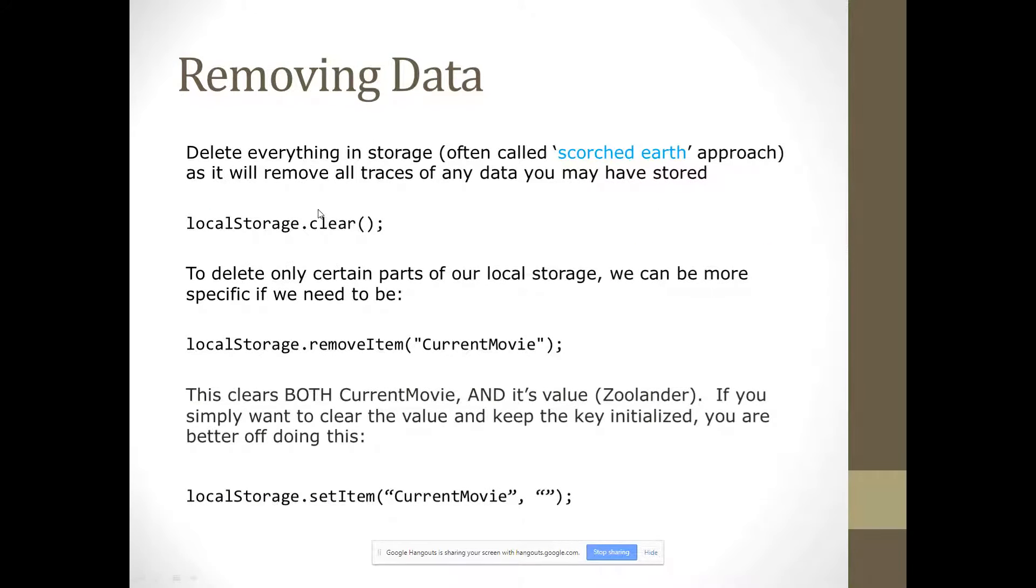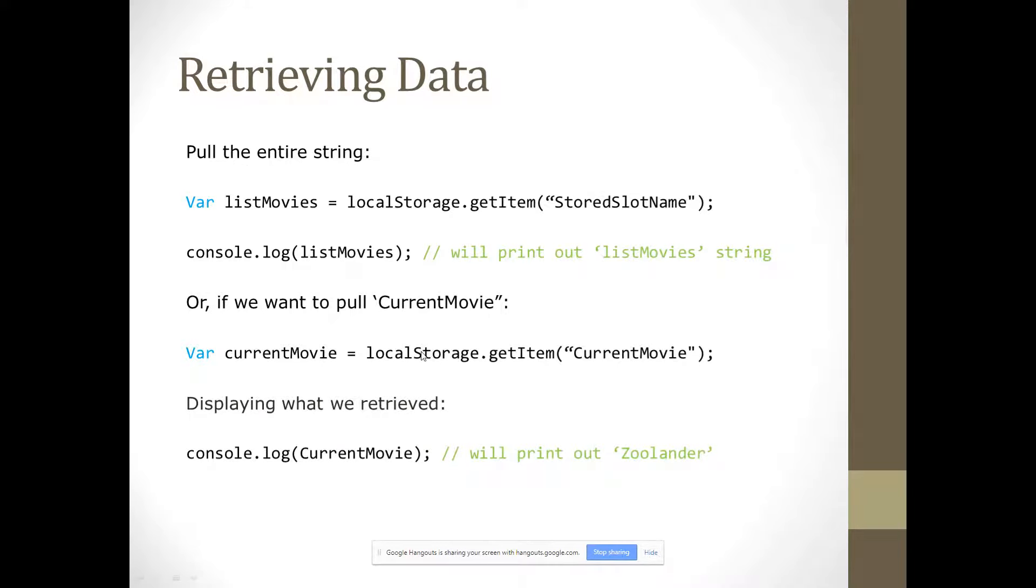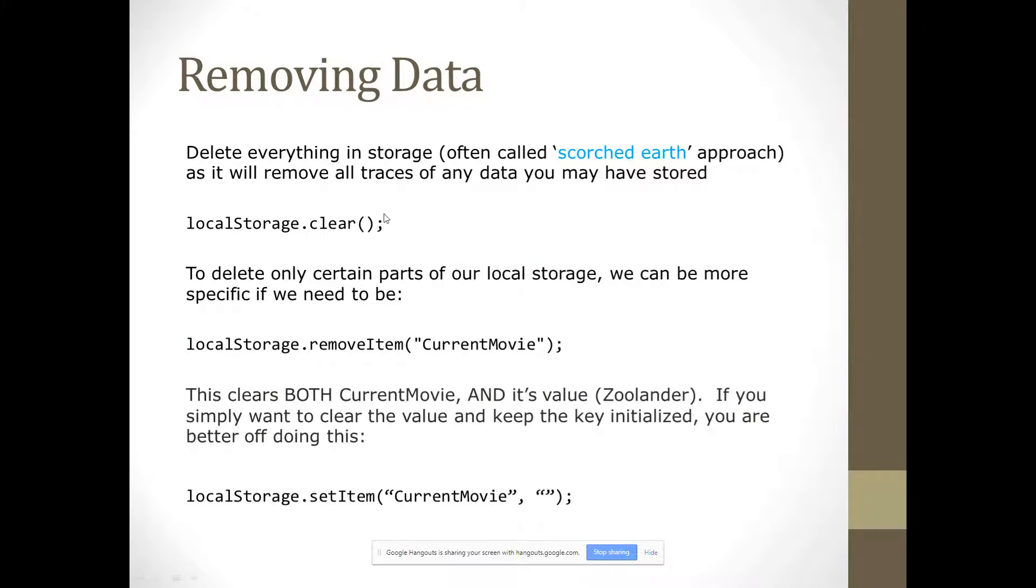So, if we want to remove data, there are a couple of different ways we can, actually a few different ways. First, we can go all scorched earth and delete everything, and that'll delete all of our local storage. That's not just current movie, it's current movie and list movies and everything. It's everything that we've stored. It's kind of scorched earth, but it's one approach that we can do. And that could be used in something like a clear all function or a reset function or something like that.